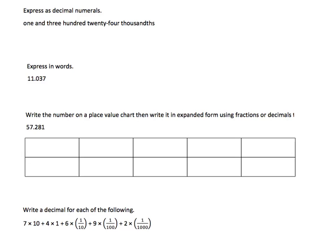Number 1c on the problem set gives you a number in word form and asks you to express it as decimal numerals, or in standard form. It reads, 1 and 324 thousandths.